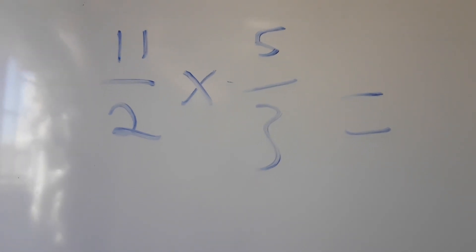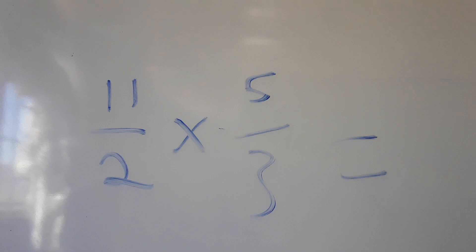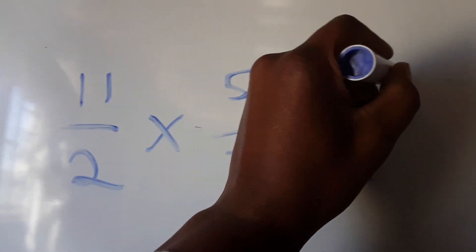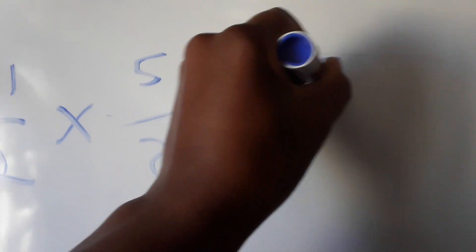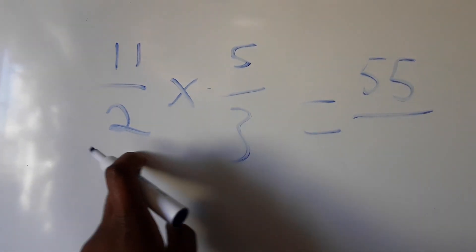So we say 11 times 5. How many times does 11 times 5? 5, 10, 15, 20, 25, 30, 35, 40, 45, 50, so it's going to be 55. So on the top part it's 55 over 2 times 3, which is 6.